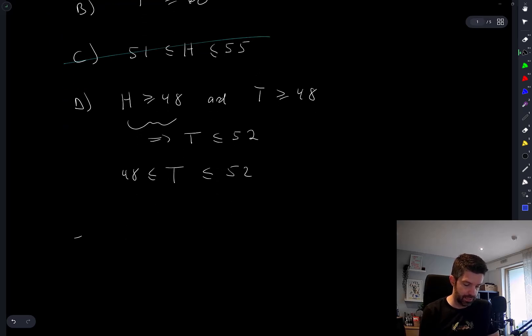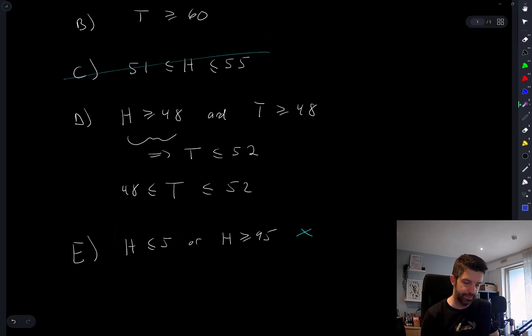Okay, and D and option E, H less than or equal to 5 or H greater than or equal to 95. Okay, just from intuition, these are both extremely small numbers. The probability that H is less than or equal to 5, very, very small.